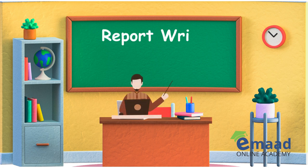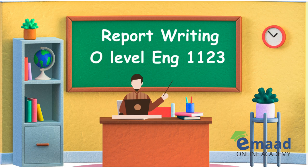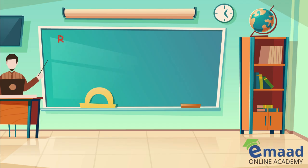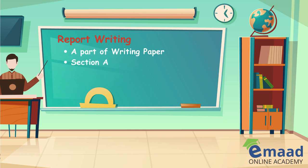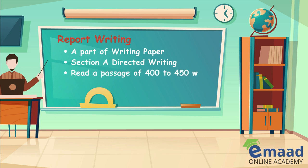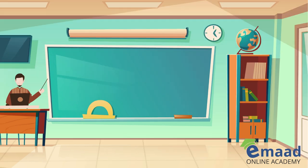Hello dear students, let's learn about report writing in O Level English 1123 exam. Report writing is part of your writing paper in Section A, directed writing. There are other options as well like report, article, and other things. For report writing, you have to read a passage of 400 to 450 words and write 200 to 250 words in your answer.